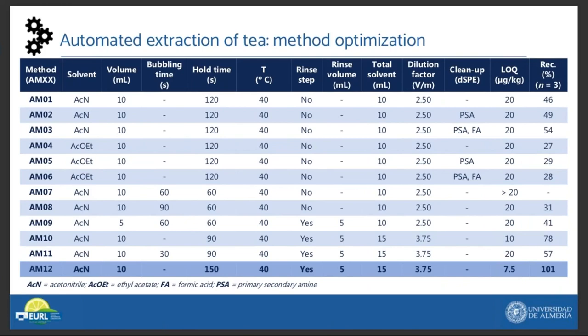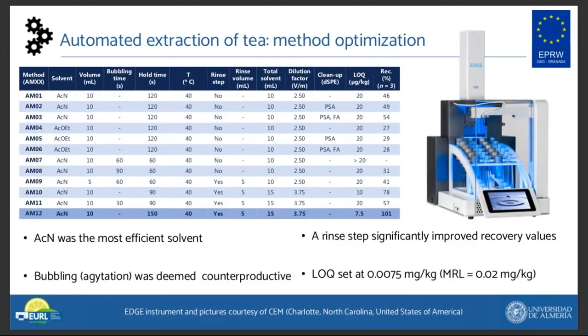Thus, we moved on from manual extraction to the automatic extraction of tea using pressurized liquid extraction. For the development of the automated method, an EDGE instrument lent to us by CEM Corporation was employed. In this table, the most important parameters for each method are summarized: solvent volume added, pump time, hold time — which is the time the sample was kept in contact with the extraction solvent — the temperature, and a rinse step, which is solvent passed through the sample with a hold time of zero seconds. First, we ran methods AM01 to AM06. The most appropriate solvent was chosen among acetonitrile and ethyl acetate. Recovery values were twice as high when using acetonitrile for anthraquinone extraction from tea. Regarding the cleanup step, it was deemed unnecessary.